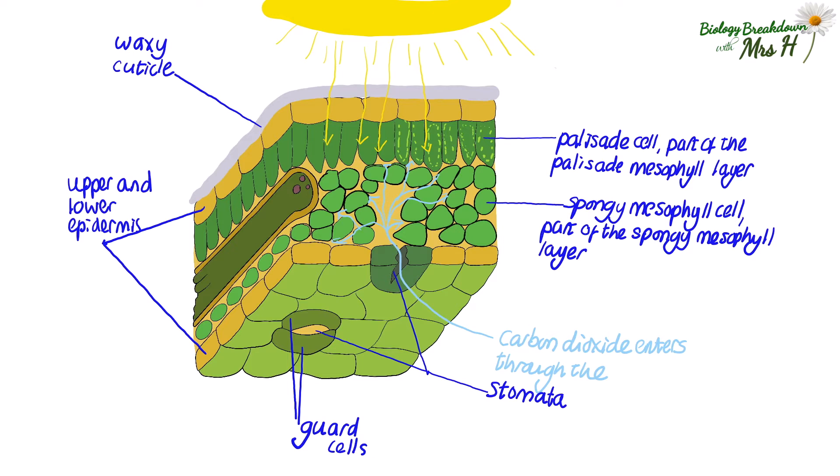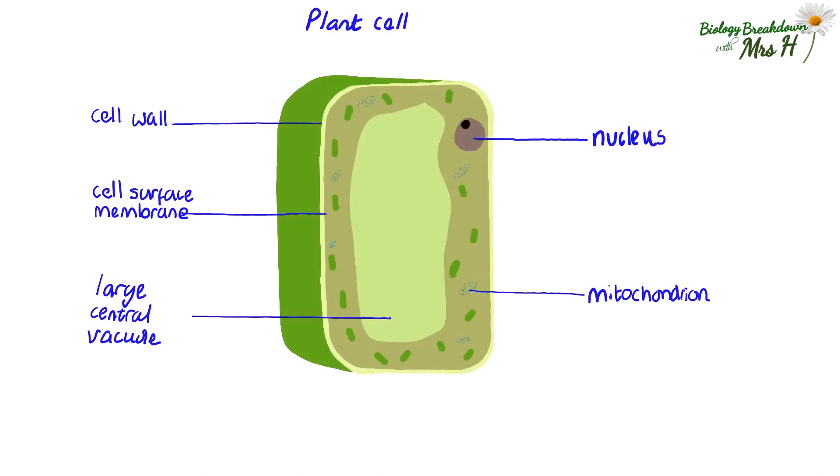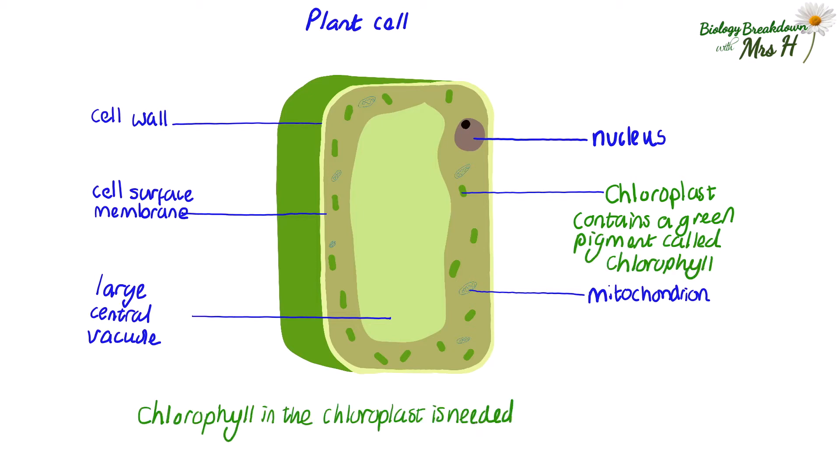Once cells have carbon dioxide, water and are exposed to light, where does the photosynthesis actually take place? And the answer is in the chlorophyll that is found in the chloroplast. The chloroplasts contain a green pigment called chlorophyll and chlorophyll absorbs the light needed for photosynthesis to take place.